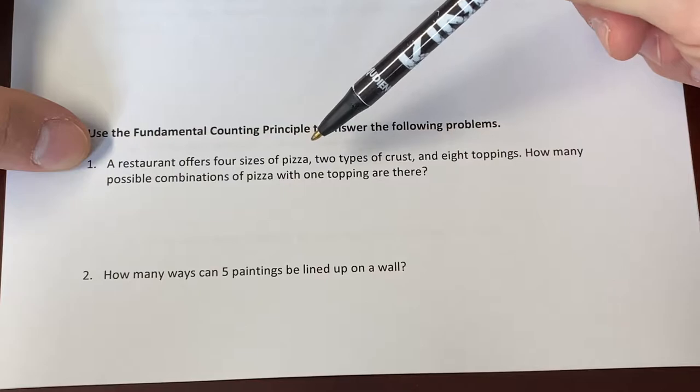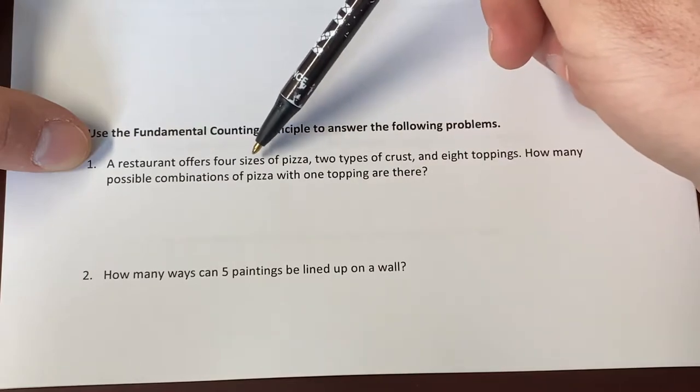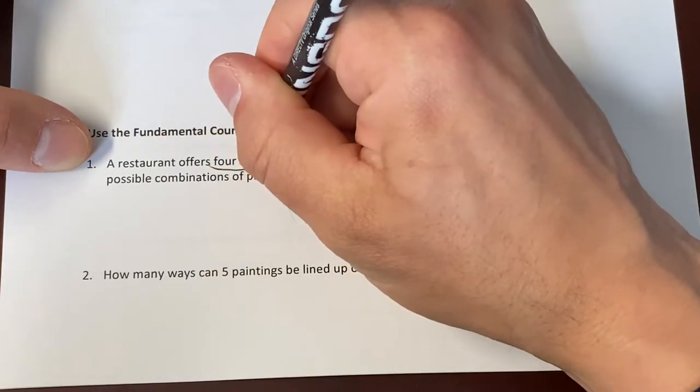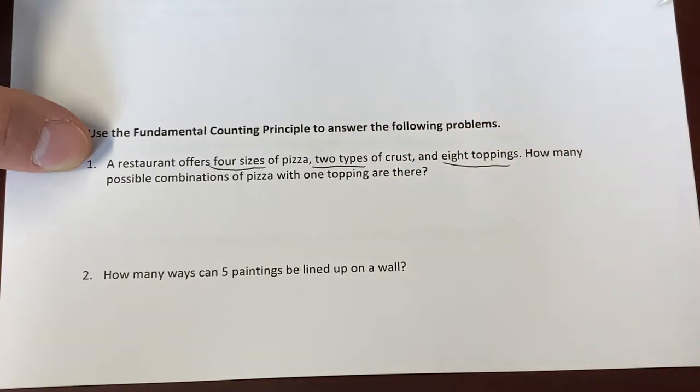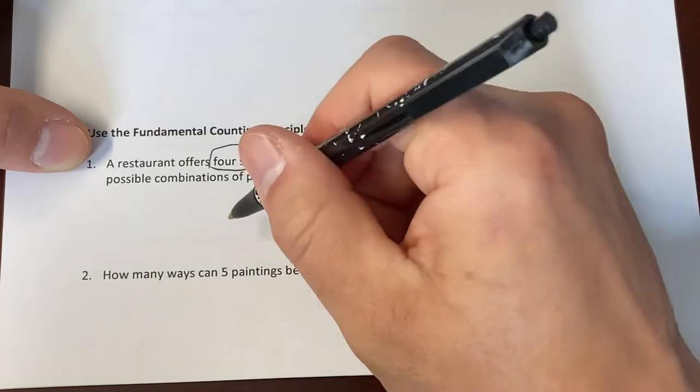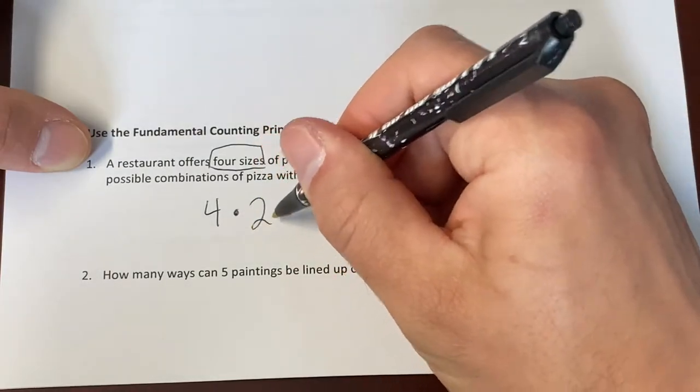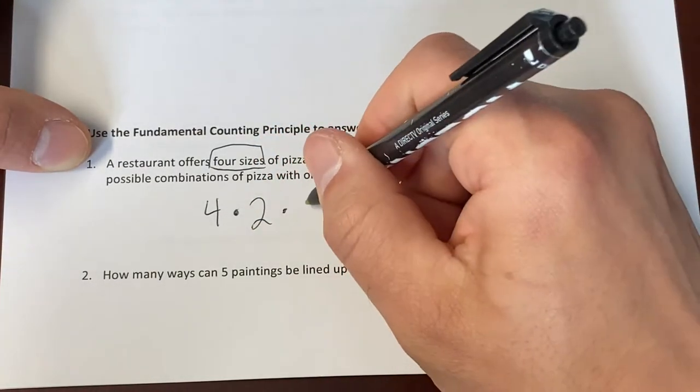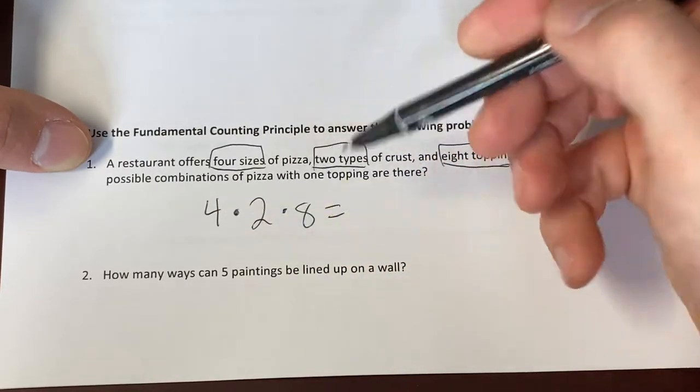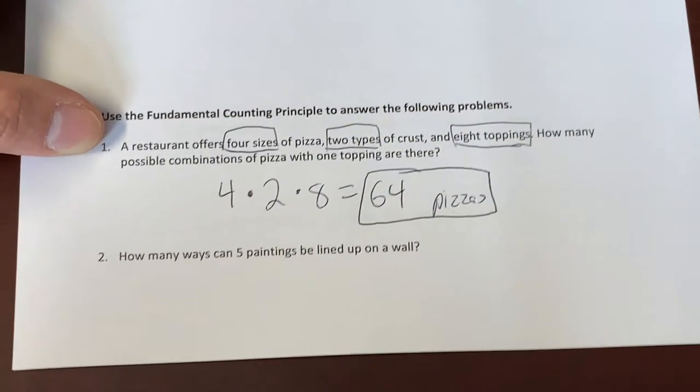We're going to come down here where it says, use the fundamental counting principle to answer the following problems. Pizza is always a famous counting principle problem because of the toppings and stuff. So here we go. A restaurant offers four sizes of pizza, two types of crust, eight toppings. How many possible combinations of pizza with one topping are there? If you're only choosing one of the toppings, you are making three choices here. Choice number one is what size? That's four. We multiply that by choice number two, which is what kind of crust we're going to get. We got two of those. And choice number three is you're going to pick one topping. We've got eight of those. Multiply straight across. Four times two is eight. Eight times eight is there are 64 possible. And that's the counting principle.